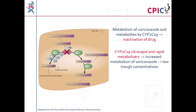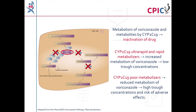In CYP2C19 ultra-rapid and rapid metabolisers, the metabolism of voriconazole is increased. This reduces the number of active voriconazole molecules in the body, causing low trough concentrations. In CYP2C19 poor metabolisers, the metabolism of voriconazole is reduced. This increases the number of active voriconazole molecules in the body, causing high trough concentrations and putting the patient at risk of adverse effects.